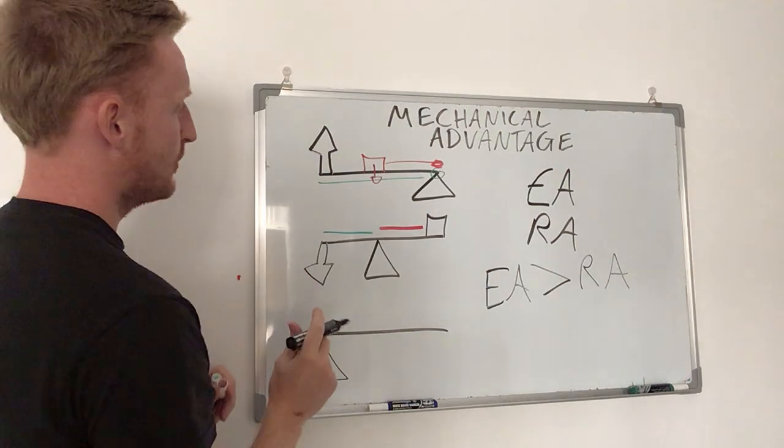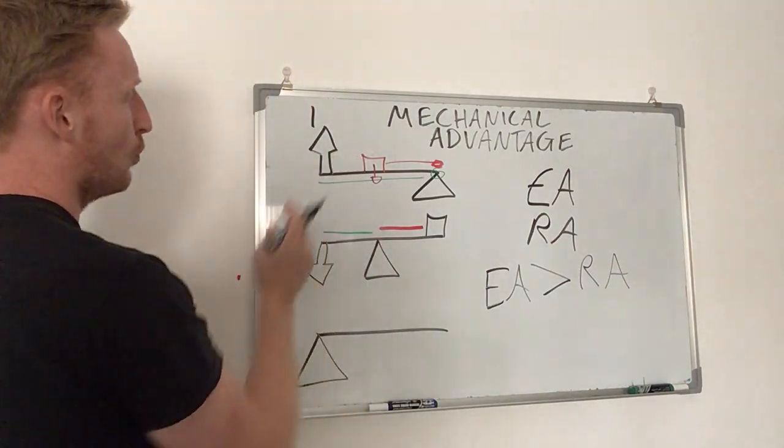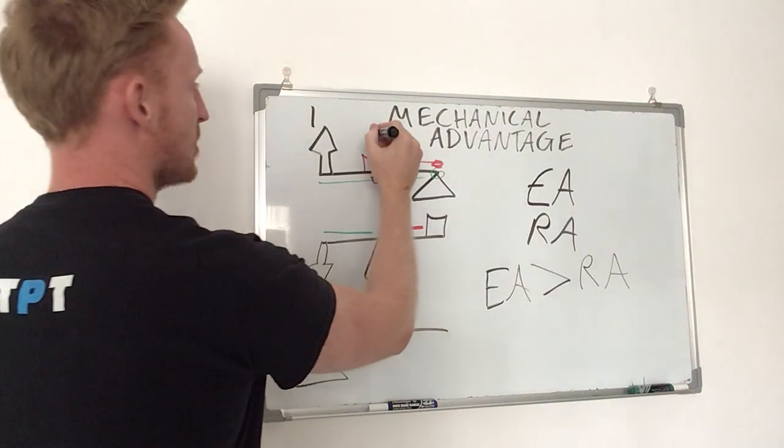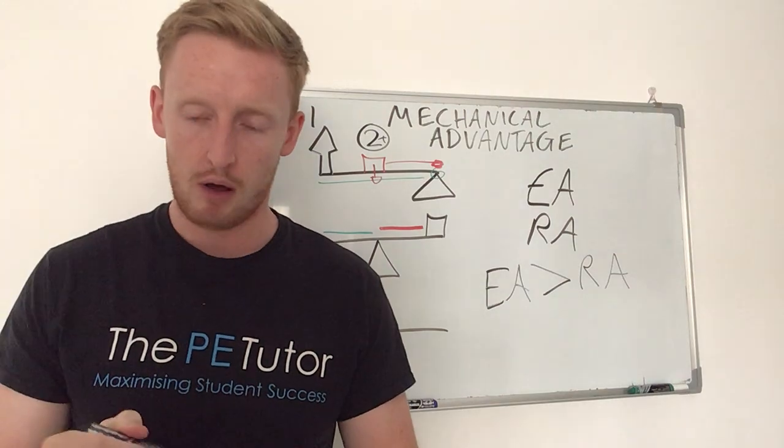Whereby, if we take this first one here, we would need, let's say, the equivalent of one force applied, but we would be able to overcome two times the size of the force that we can apply.